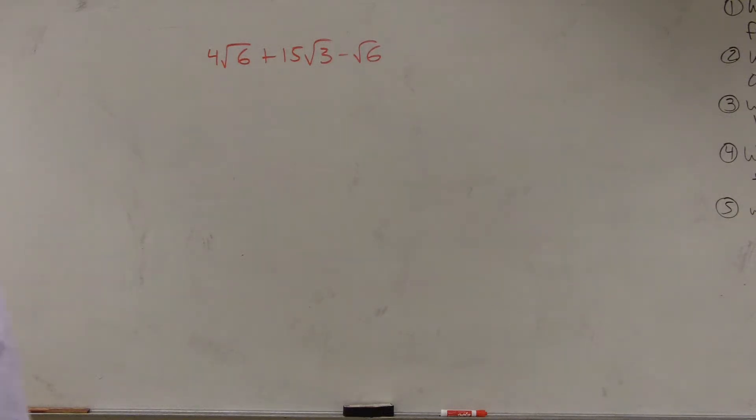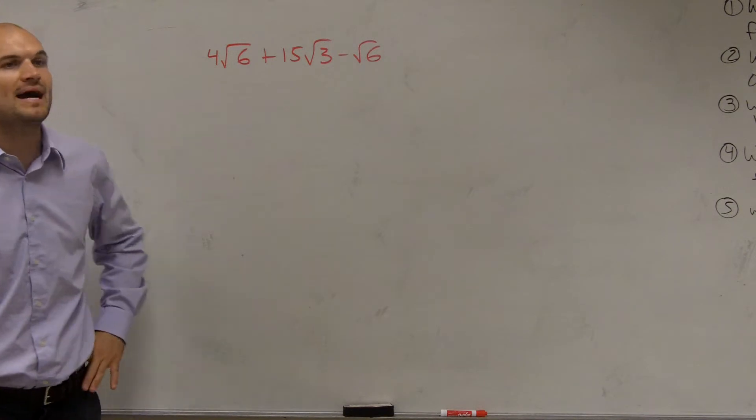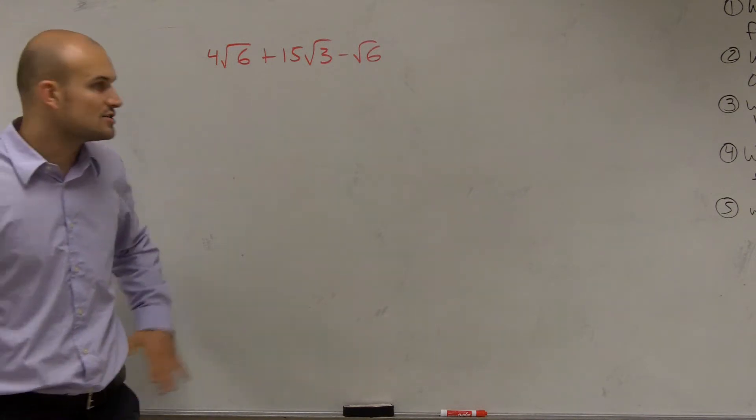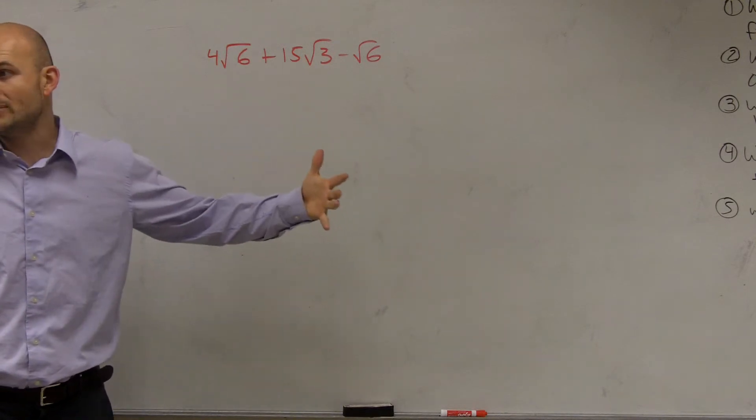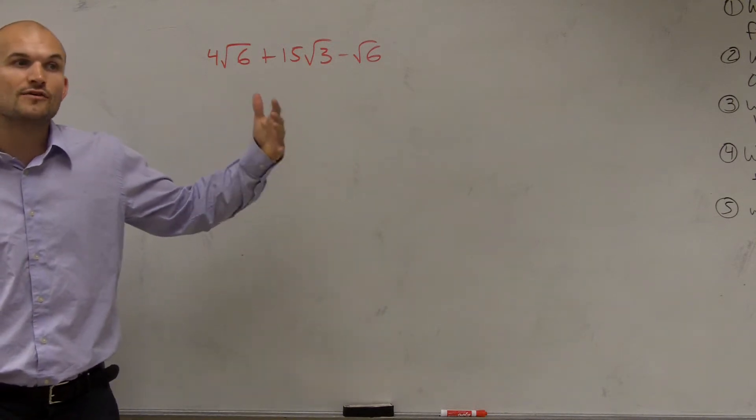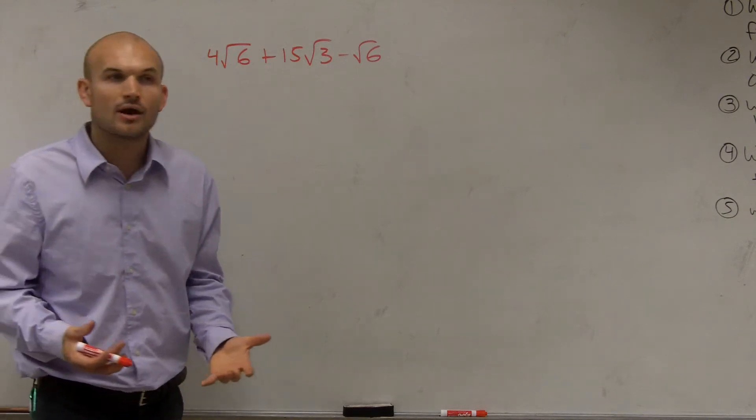All right. So for this problem, we have 4 times radical 6 plus 15 radical 3 minus the square root of 6. Now, when we're simplifying expressions with radicals, it's just like we did with polynomials. The first thing we're going to do is combine like terms.